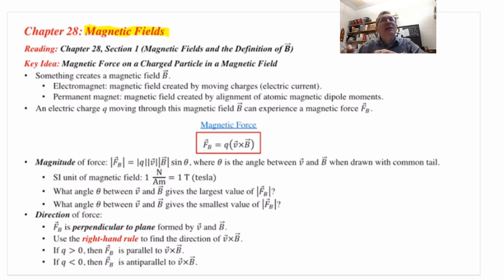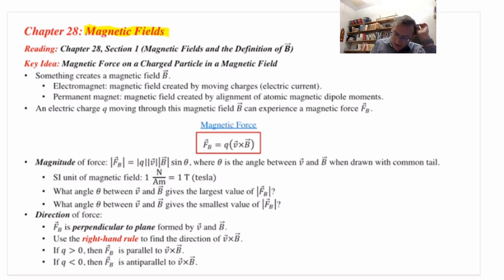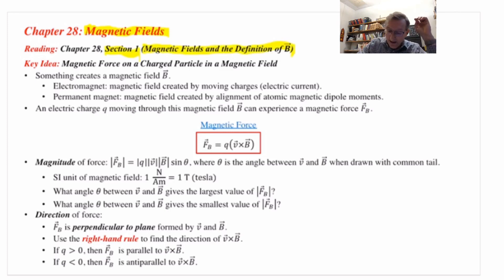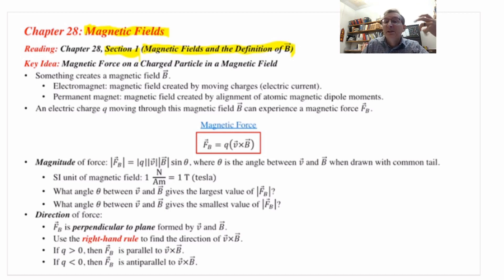A little bit later we're going to show how electric and magnetic fields are actually linked together. But we start with Chapter 28, Section 1: magnetic fields and the definition of magnetic field. The first thing to be aware of is the symbol that we use in physics for this vector field called the magnetic field.